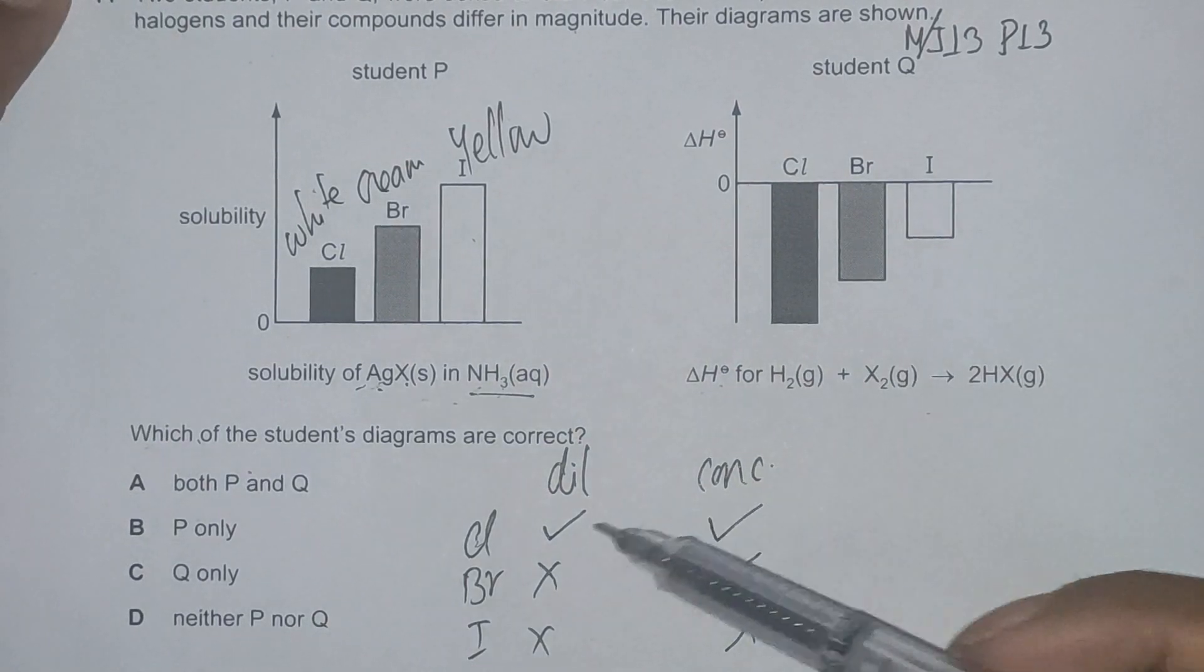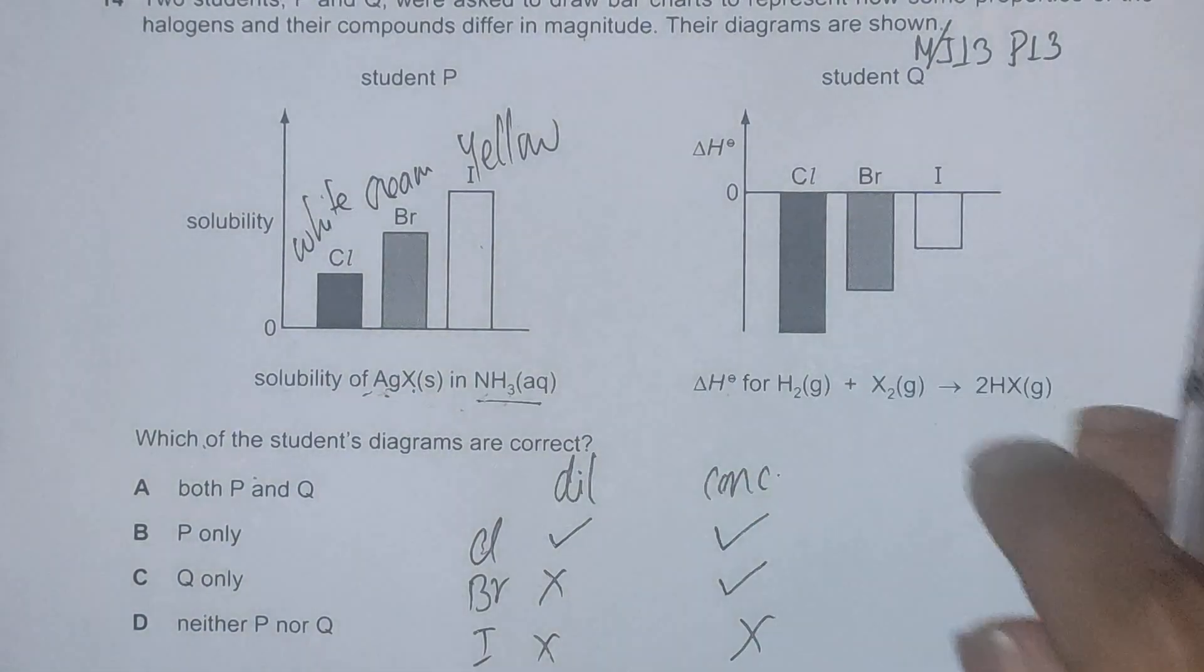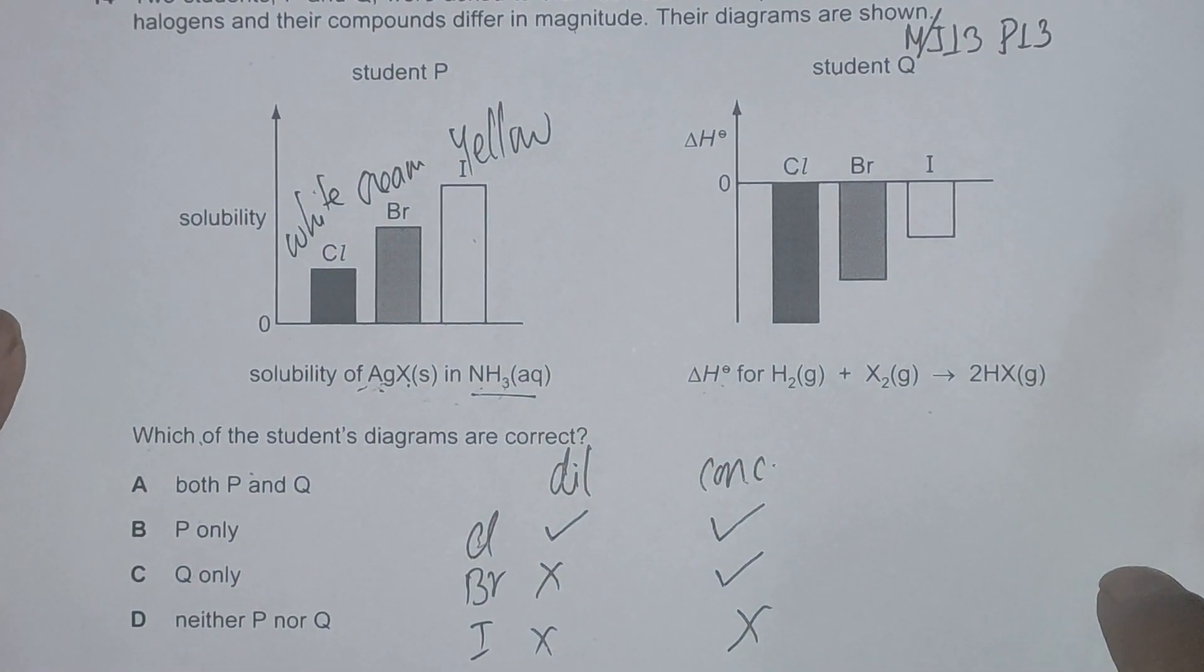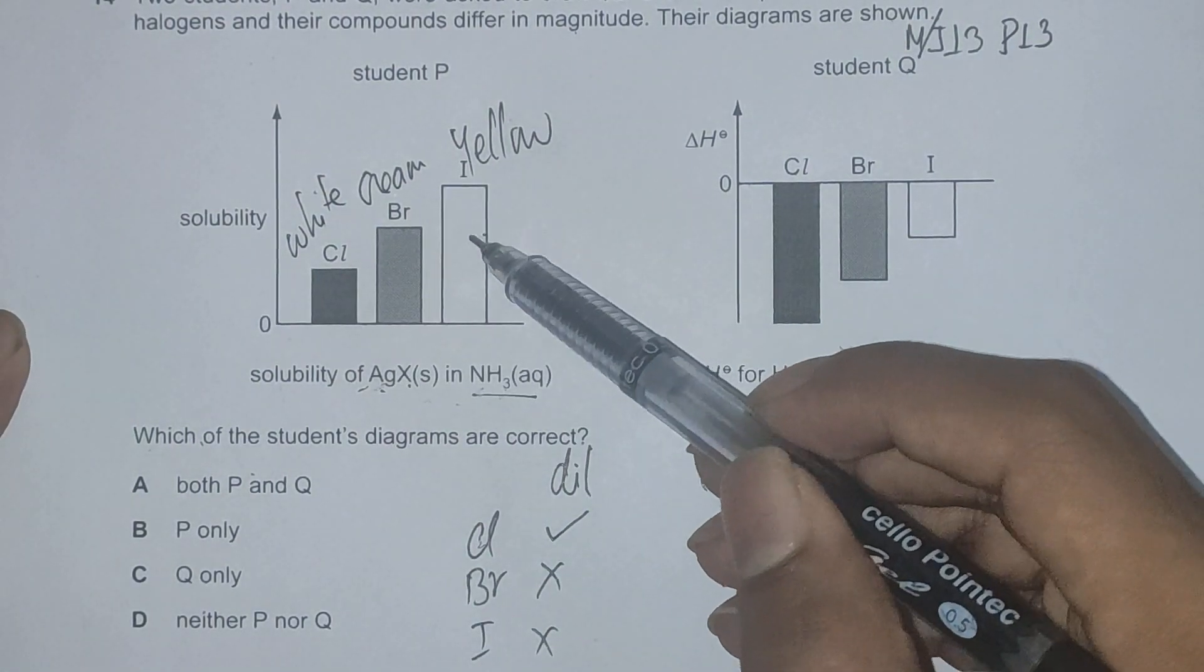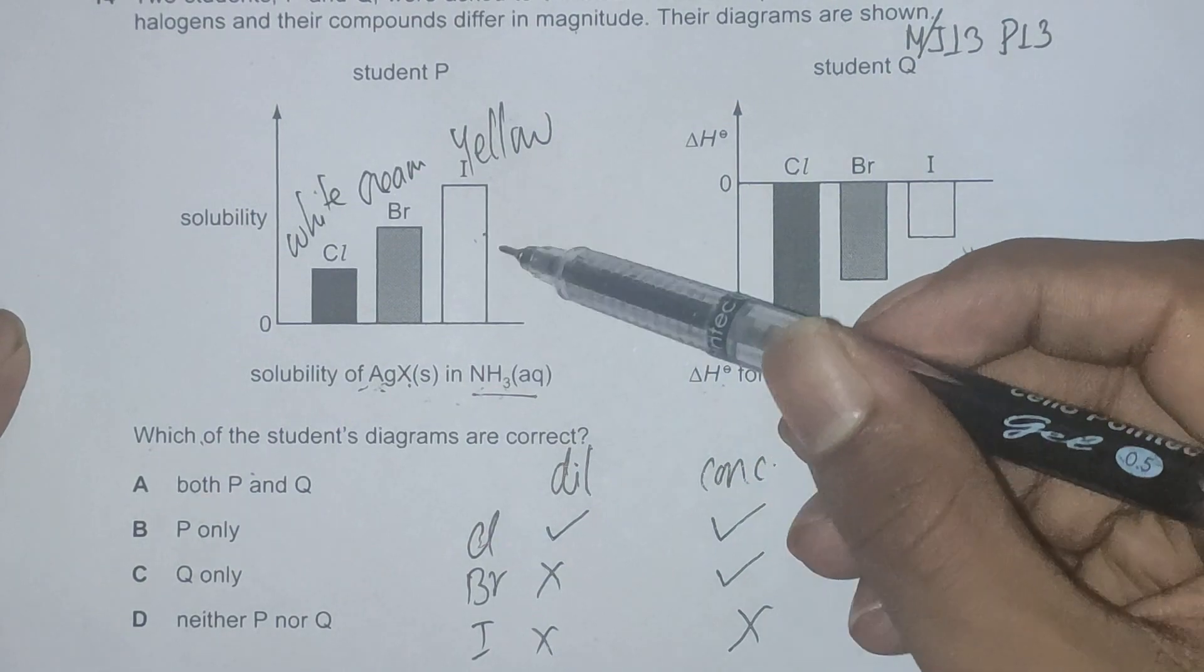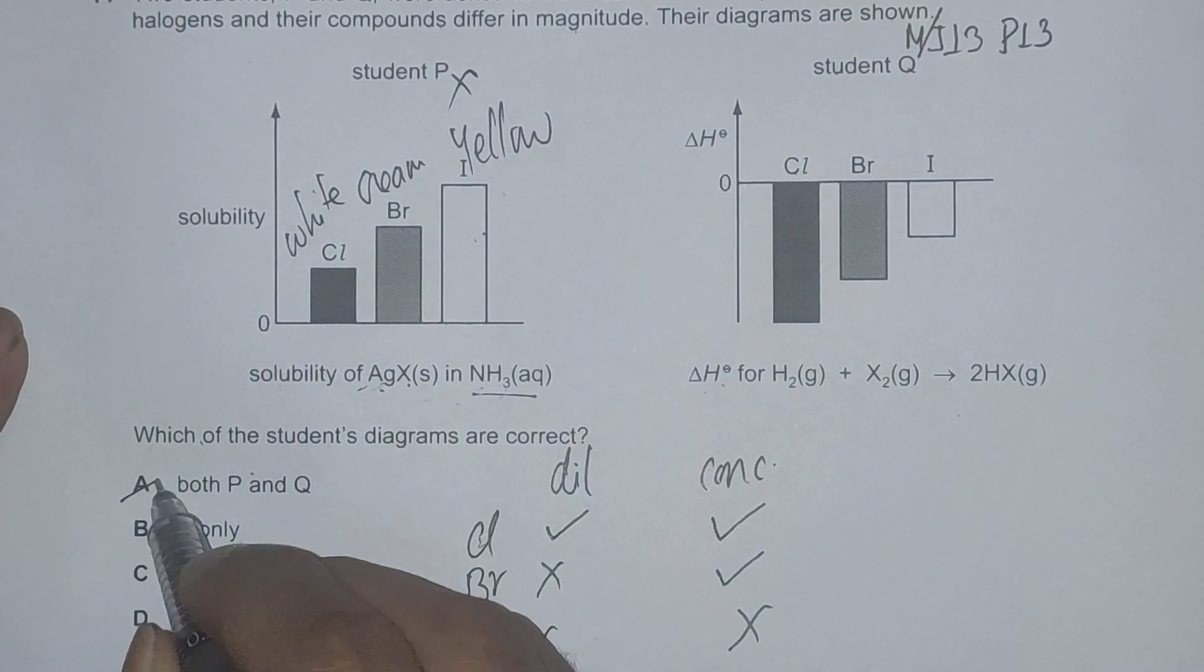So this means the solubility decreases down the group. That means chlorine is the most soluble and iodine is least soluble. Whereas the diagram, the bar chart suggests the opposite. The bar chart suggests chlorine is least soluble out of these three and iodine is the most soluble. So student P should be incorrect. This means we can rule out options A and B.